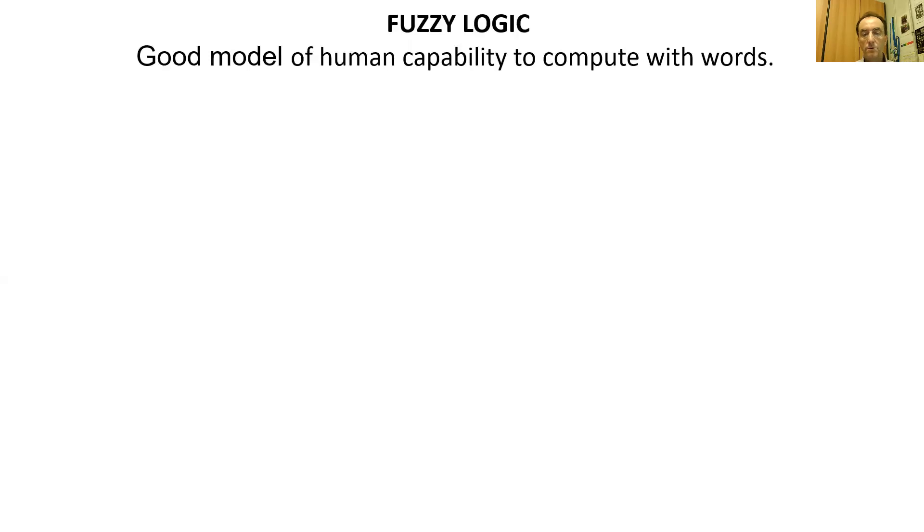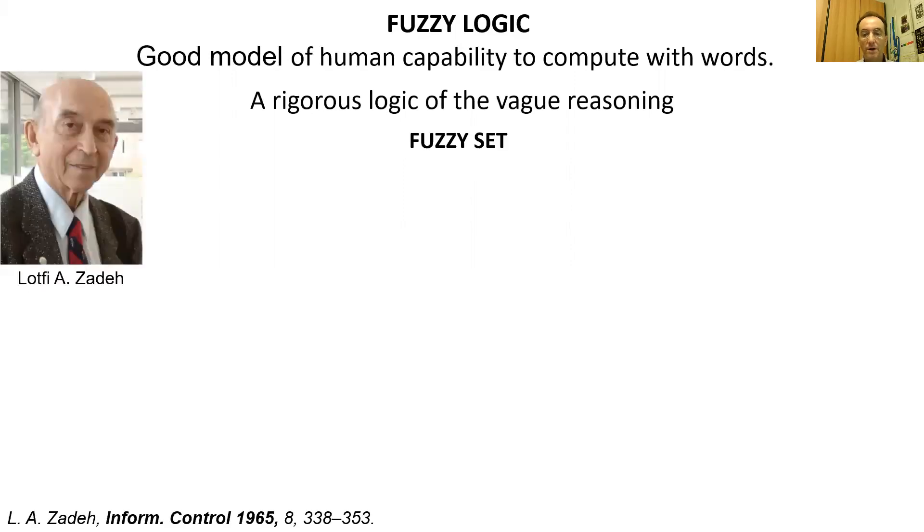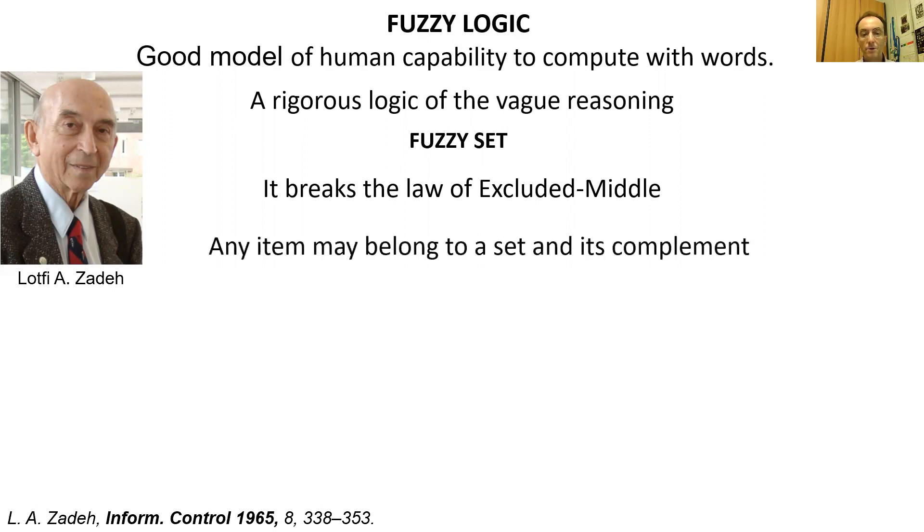Fuzzy logic is a good model of human capability to compute with words. Fuzzy logic has been defined as a rigorous logic of vague and approximate reasoning. Fuzzy logic is based on the theory of fuzzy sets, proposed by the engineer Lotfi Zadeh in 1965. A fuzzy set is different from a classical Boolean set because it breaks the law of excluded middle. In fact, an item may belong to a set and its complement at the same time.